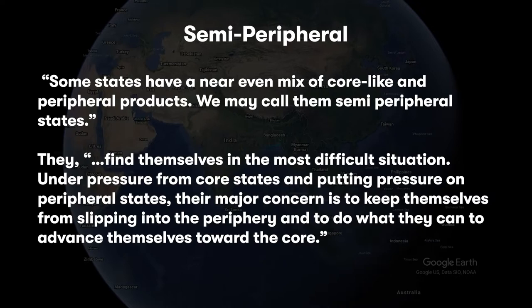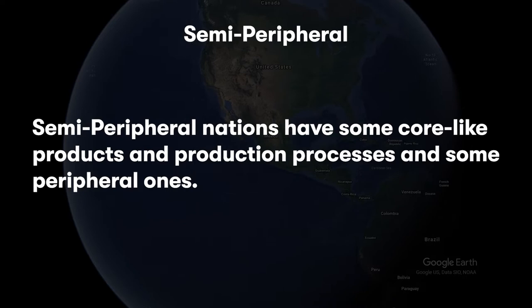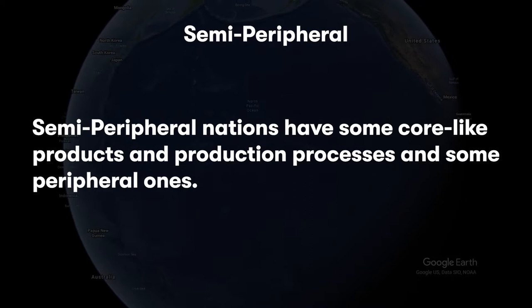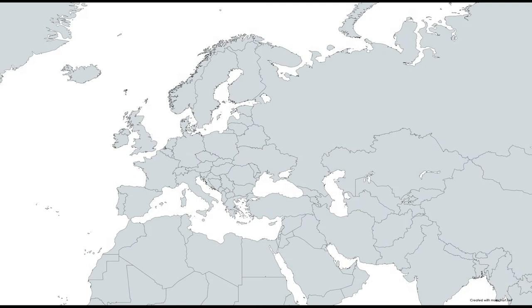They find themselves in the most difficult situation — under pressure from core states and putting pressure on peripheral states. Their major concern is to keep themselves from slipping into the periphery and to do what they can to advance themselves toward the core. Semi-periphery nations maintain both some peripheral and some core-like production, and they compete with other semi-peripheral nations to achieve core status.